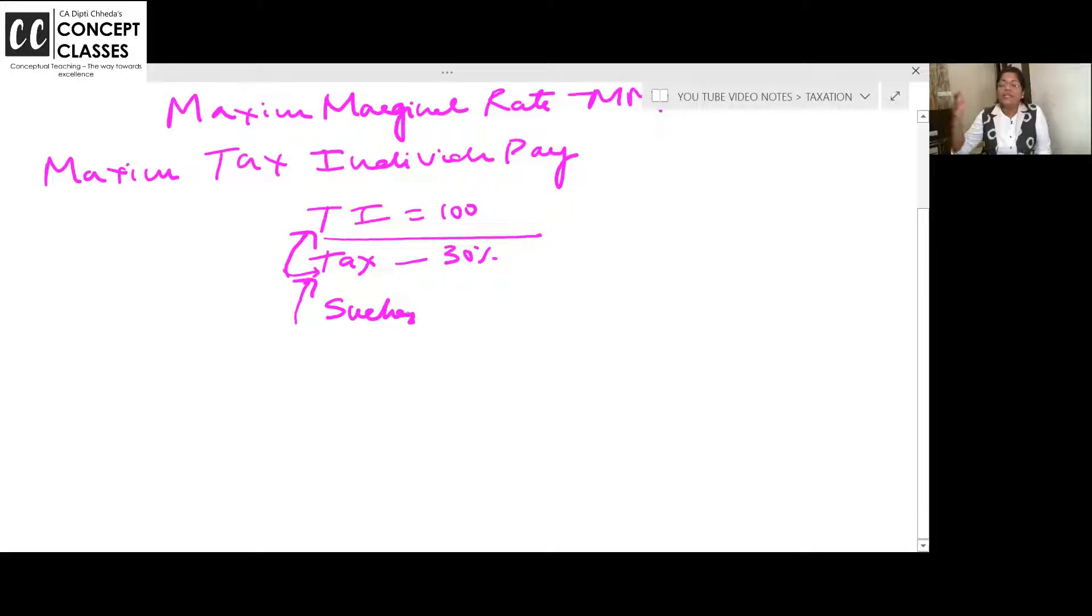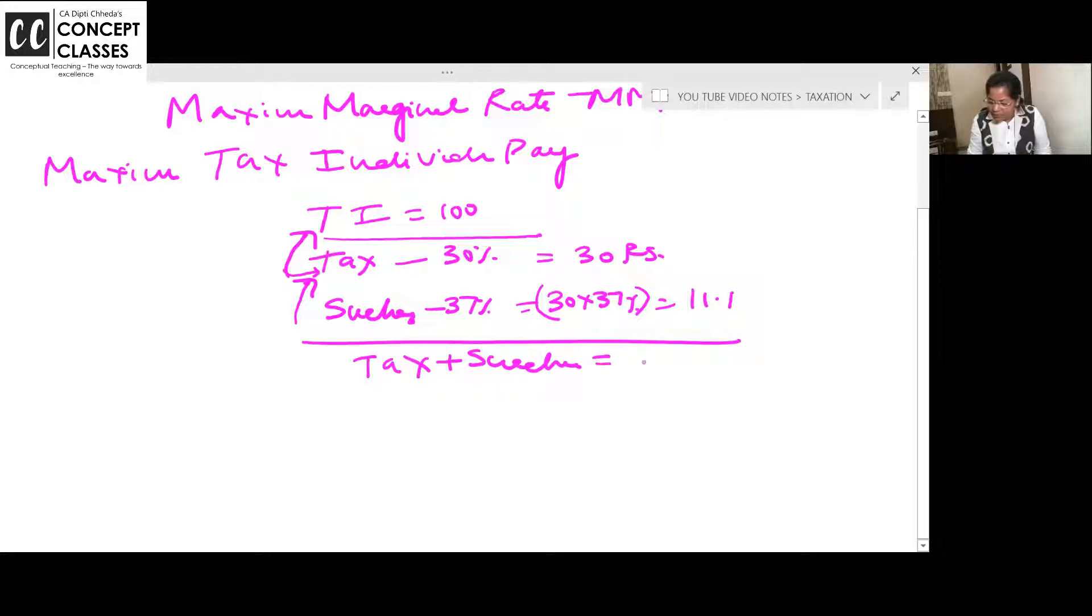Surcharge is the additional tax. There is a separate video for surcharge rates. Do check it up. Different slab rates for individual, different surcharge rates are there - 10, 15, 25, 37. Surcharge is always calculated on the tax. So surcharge is 37% on the tax. So tax is 30 rupees. I am taking it as 30 rupees on 100 as an example. And on 30, 37% is the surcharge. That comes to 30 ka 37%, 11.1. Now what is tax plus surcharge? 41.1.